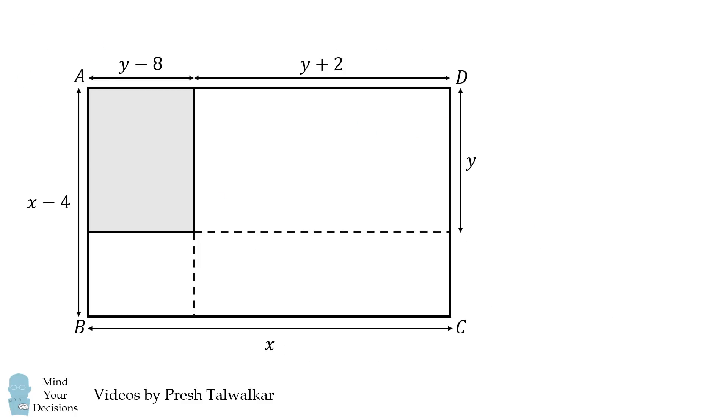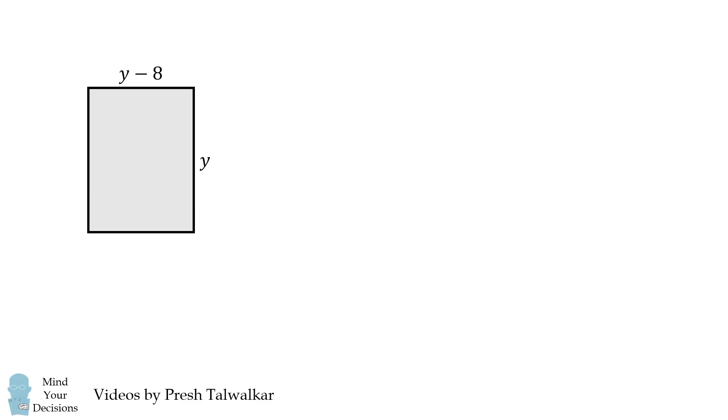We'll get started by focusing on the dimensions of the shaded rectangle. We then calculate the area of this rectangle. It'll be y multiplied by the quantity y minus 8. This is equal to 9 square centimeters.